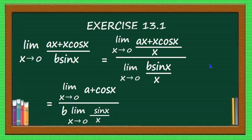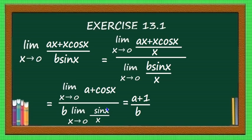In the denominator, b is constant so it can be taken outside: b times limit x→0 of sin(x)/x. Now, limit x→0 of a equals a, and limit x→0 of cos(x) equals cos(0) = 1, so the numerator becomes a + 1. The denominator: b is constant and limit x→0 of sin(x)/x = 1, so the denominator is b. The answer is (a + 1)/b.